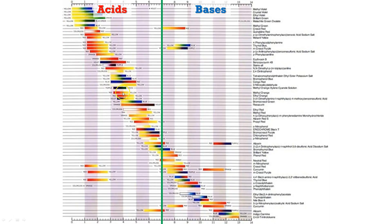Phenolphthalein is one that we're going to be using later on — that's going to go from clear to pink. I've used methyl red, methyl orange, bromocresol purple, and other ones like that before. All of those are going to give you different pH ranges and different changes in color based on where they fall on the scale.